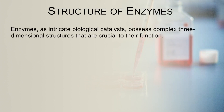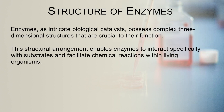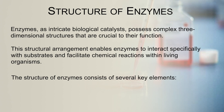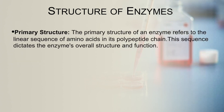Let us look into the structures of enzymes. Enzymes are intricate biological catalysts that possess complex three-dimensional structures, which are very important for their function. Their structural arrangement enables them to interact specifically with substrates and facilitate chemical reactions within living organisms. The structure of an enzyme consists of several key elements. Number one: primary structure, which refers to the linear sequence of amino acids in its polypeptide chain. This sequence helps in dictating the overall structure and function of an enzyme.